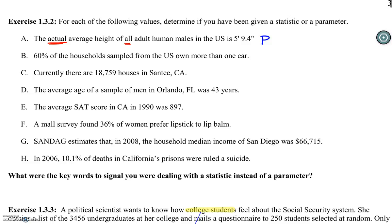Pause and quickly write down S or P for everything, then come back. Next, B is a statistic — we have the word sample there, which tells us this value of 60% is a measurement from a sample. C — we have a number of houses; there's nothing to tell me it's from a sample or being estimated, so we go with parameter. It makes sense: if we're talking about homes in Santee, they collect property tax on every house. D is another statistic — we have the keyword sample, telling us that average age of 43 is from a sample.